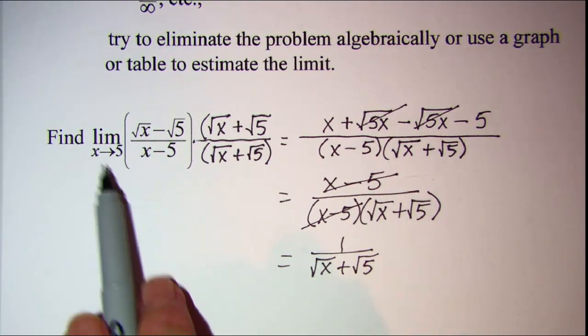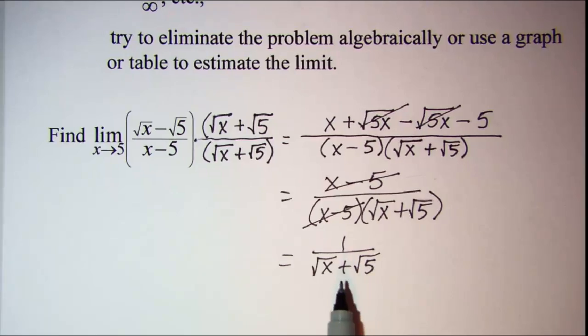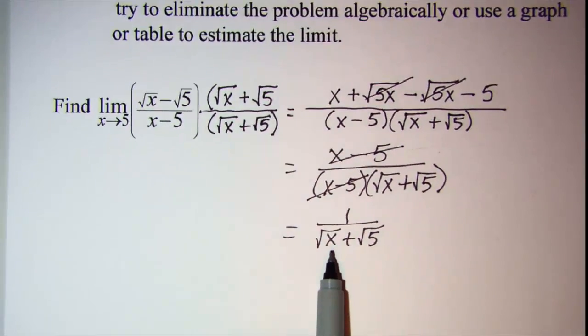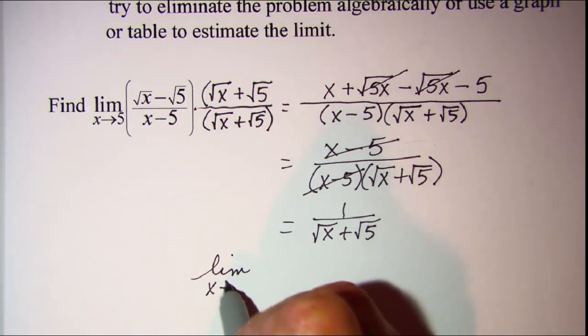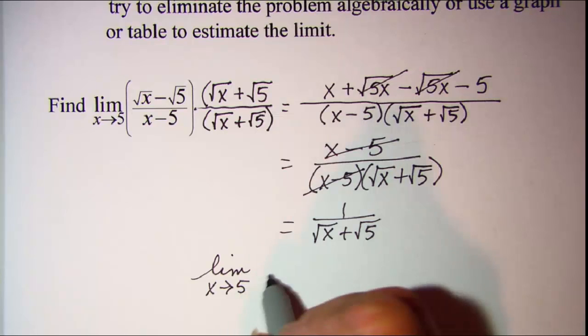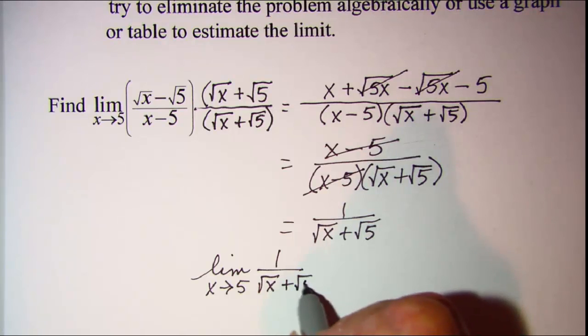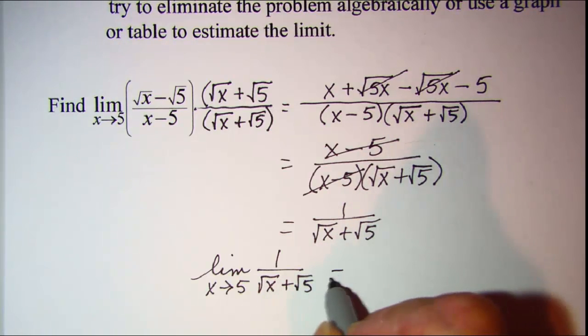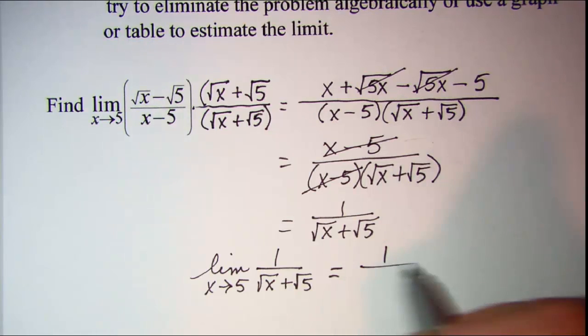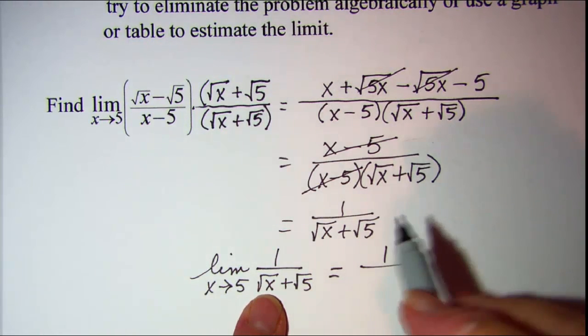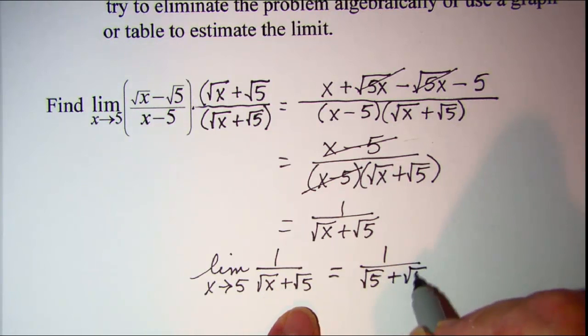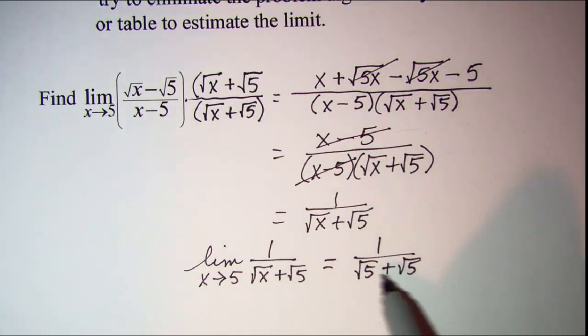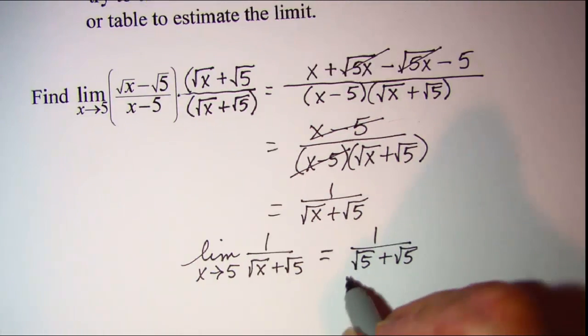Now the limit on this as x approaches 5, we're just going to use direct substitution. So we'll have 1 over, and then we'll substitute in 5, so we'll have root 5 plus root 5.